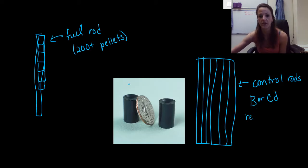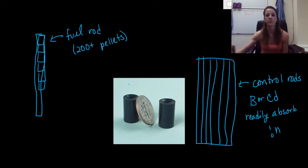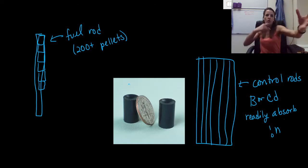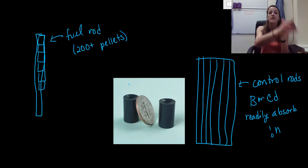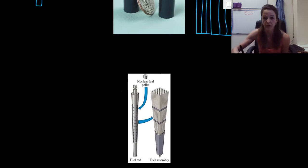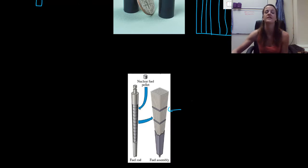Control rods are used because they readily absorb neutrons. They're just perfect metals we stick in between the fuel rods. When the fuel rods are going through chain reactions and releasing neutrons, the control rods sitting right next to them absorb all those neutrons, making sure there's no way a neutron can hit another fuel rod and start another chain reaction. So our fuel assembly has nuclear fuel rods full of enriched pellets, and control rods intermixed.